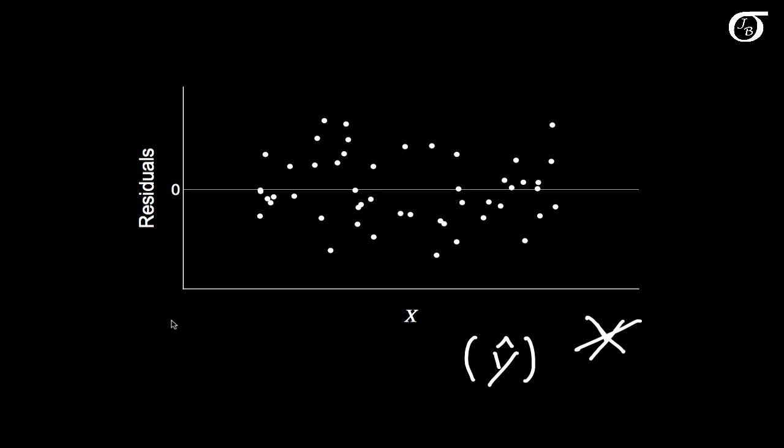One thing to note right off the bat, that the residuals always sum to 0 in simple linear regression. Those observed residuals are going to sum to 0, and that's why I put this 0 line in for a little perspective. The residuals sum to 0 and so they have a mean of 0.